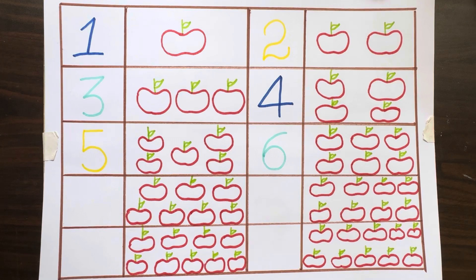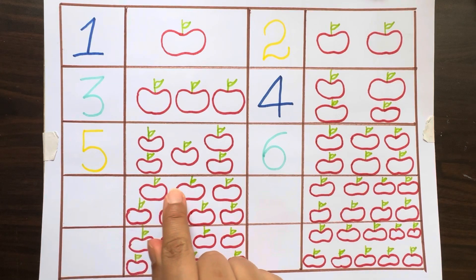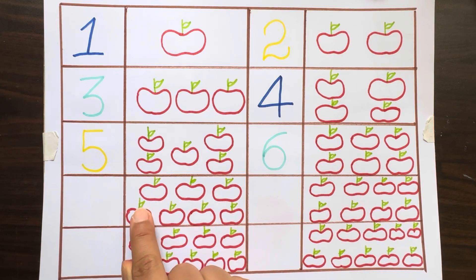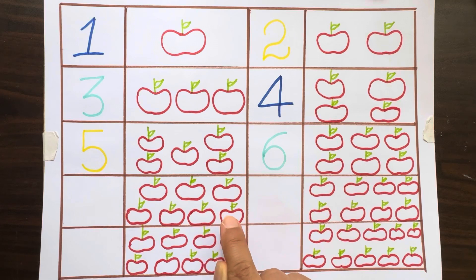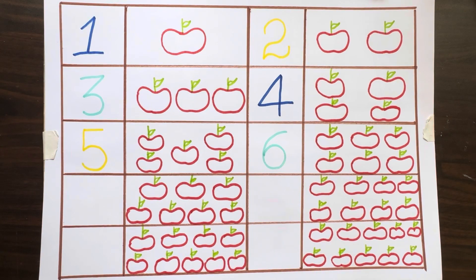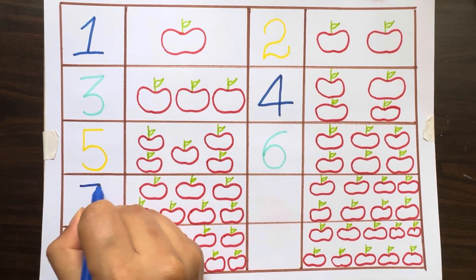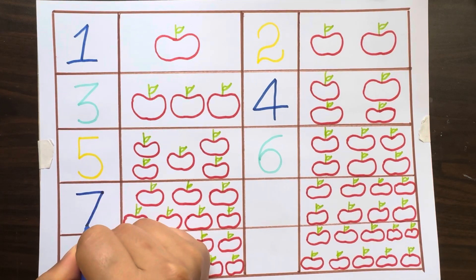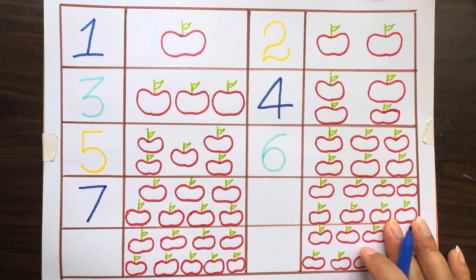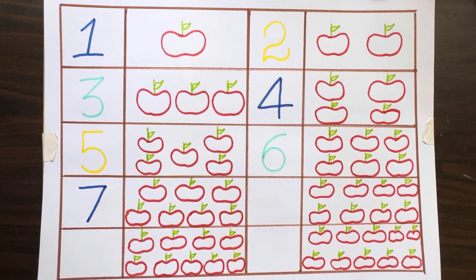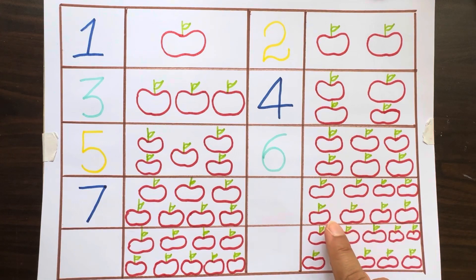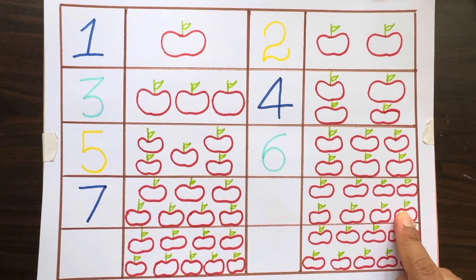One, two, three, four, five, six, seven — in this box we have seven apples, number seven. One, two, three, four, five, six, seven, eight — in this box we have eight apples.